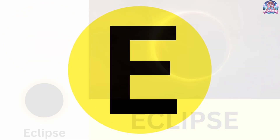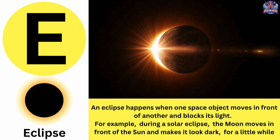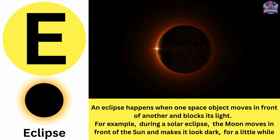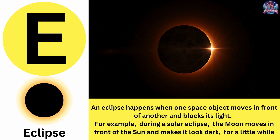E. E is for eclipse. An eclipse happens when one space object moves in front of another and blocks its light. For example, during a solar eclipse, the moon moves in front of the sun and makes it look dark for a little while. Eclipse.